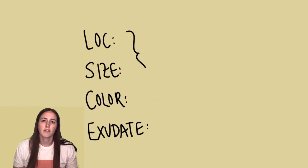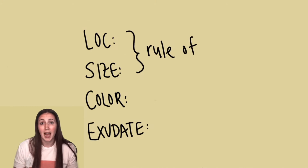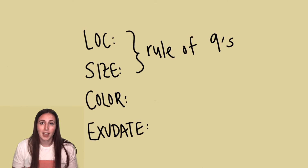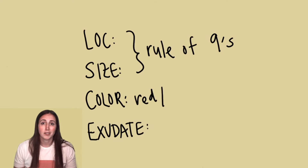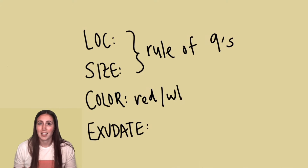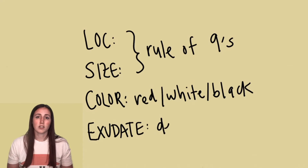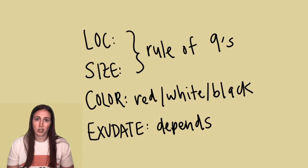Wounds that come from burns are pretty variable depending on what did the burning and how extensive it was. You can use the rule of nines to determine how much surface area of the body the wound is covering. Depending on what did the burning, the presentation can vary in color from red to white to black. Knowing the skin layers will help you determine the depth and severity of the wound as well as the presentation.